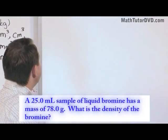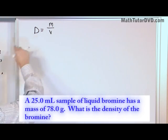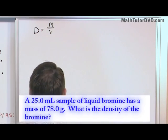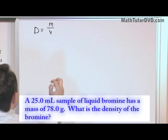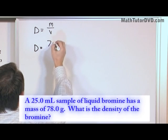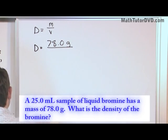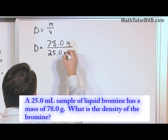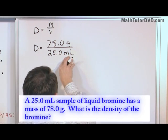What we need to do is realize that density is equal to mass divided by volume. This is one of those equations that you should memorize, but hopefully after talking about it you'll understand why it's equal to mass divided by volume. In the problem we know the mass of this sample of bromine — it's equal to 78 grams — and we're dividing it by the volume, which is 25 milliliters.